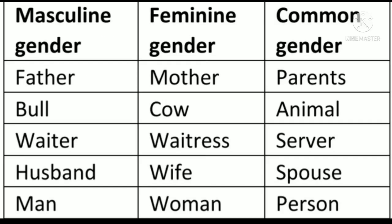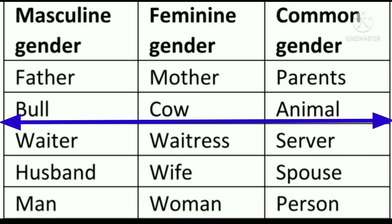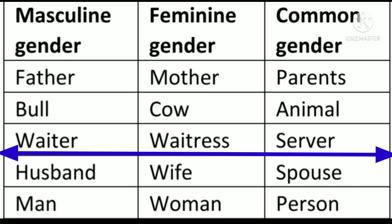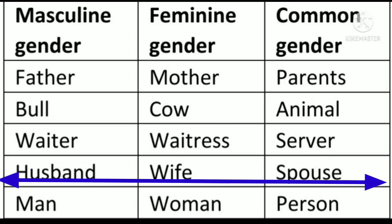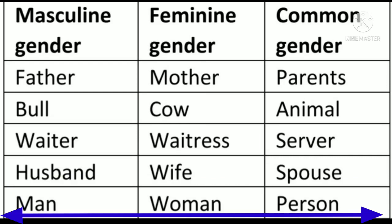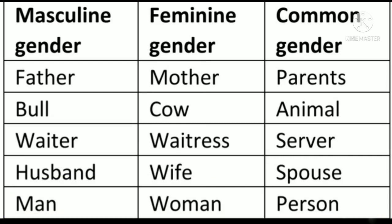A few more examples, children. Masculine: father; feminine: mother; common: parents. Bull is masculine, cow is feminine, and animal is common. Waiter is masculine, waitress is feminine, and server is common gender. Husband is masculine, wife is feminine, and spouse is common. Man is masculine, woman is feminine, and person is common gender.